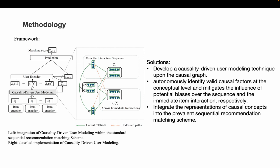In our method, we develop a causality-driven user modeling technique based on our proposed causal graph. We autonomously identify valid causal factors at the conceptual level and mitigate the influence of potential biases without depending on auxiliary features. Such operations are performed over the sequence and the immediate item interactions respectively.